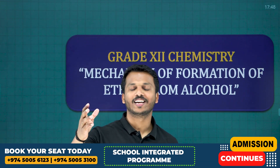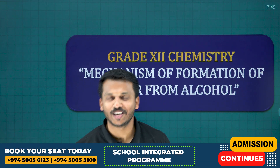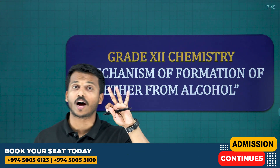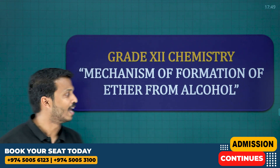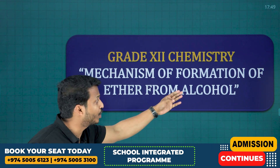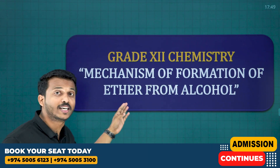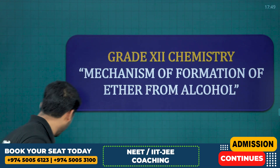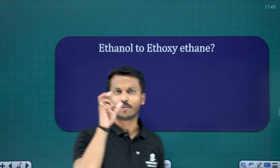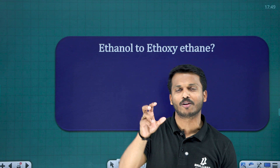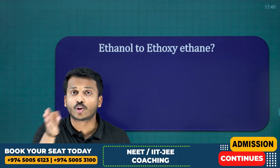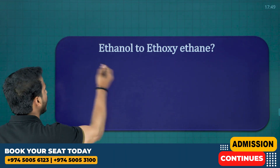Hey guys, welcome to Brilliant Katha. Here we are discussing the third mechanism from the chapter alcohol, phenols and ether — the mechanism for formation of ether from alcohol. Let me introduce one example here: this is the basic example mentioned in the NCRT textbook. Ethanol to ethoxyethane.